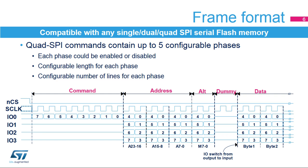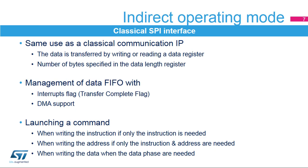The Quad SPI Memory Interface used in Indirect Operating Mode behaves like a classical SPI interface. Transferred data goes through the data register with FIFO. Data exchanges are driven by software or by the DMA controller, using related interrupt flags in the Quad SPI status registers.